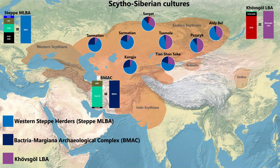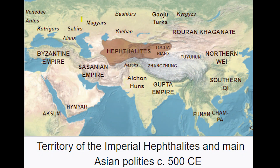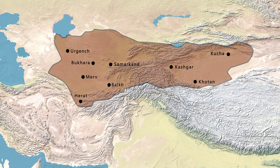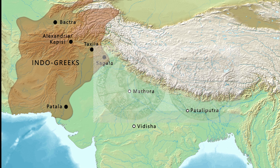A second theory holds that the Pashtuns descended from the Sakas, a group of nomadic Eastern Iranian people who historically inhabited the Eurasian steppes and the Tarim Basin. Another theory claims descent from the Hephthalites, an ancient Iranian nomadic confederation that inhabited Central Asia during late antiquity. The last theory suggests descent from Greek-admixed Rajputs, recalling the connection between Indians and Greeks during the campaigns of Alexander the Great.